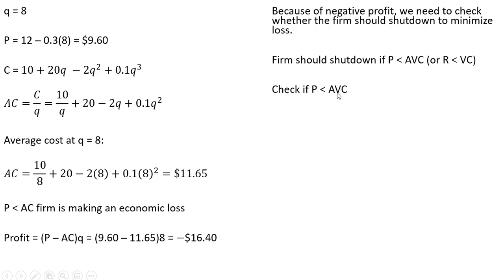Let's first check if price is less than average variable cost. If it is, the firm would want to produce nothing. Here's our variable cost. To get average variable cost, we take variable cost and divide that equation through by q. 20q divided by q is just 20 minus 2q squared divided by q is just minus 2q and so on.